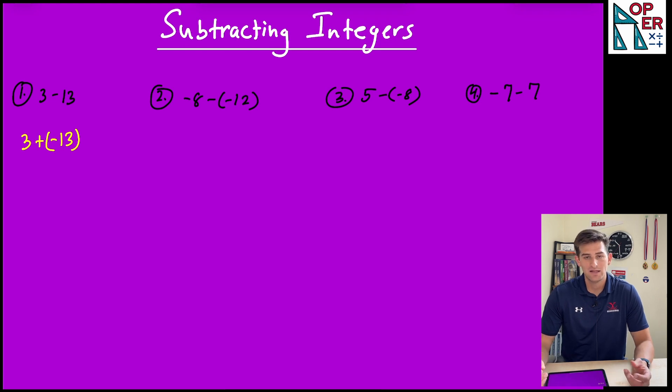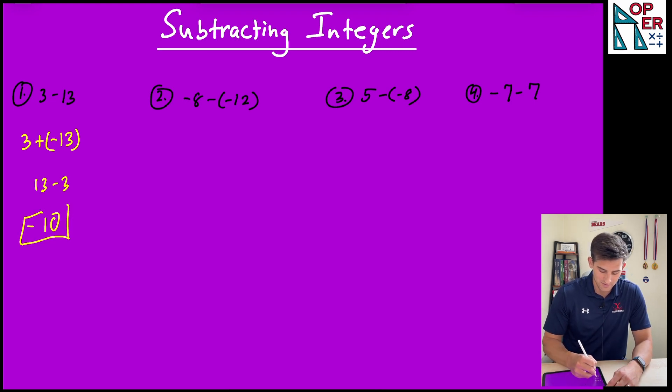Now we are adding and they're opposite signs. So what is our rule for that? We subtract the larger absolute value minus the smaller. So this would be 13 minus 3, and that would be 10. Now we go back and look at the larger absolute value and what its sign was. The larger absolute value was 13 and its sign was negative, so this would be negative 10 as our answer.